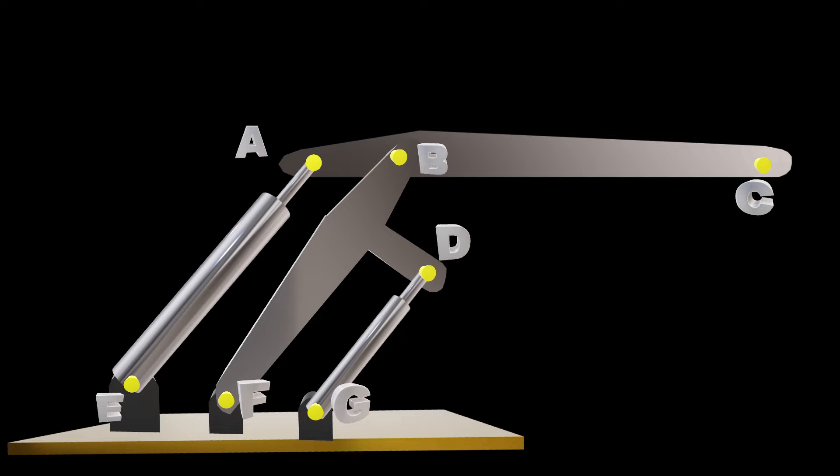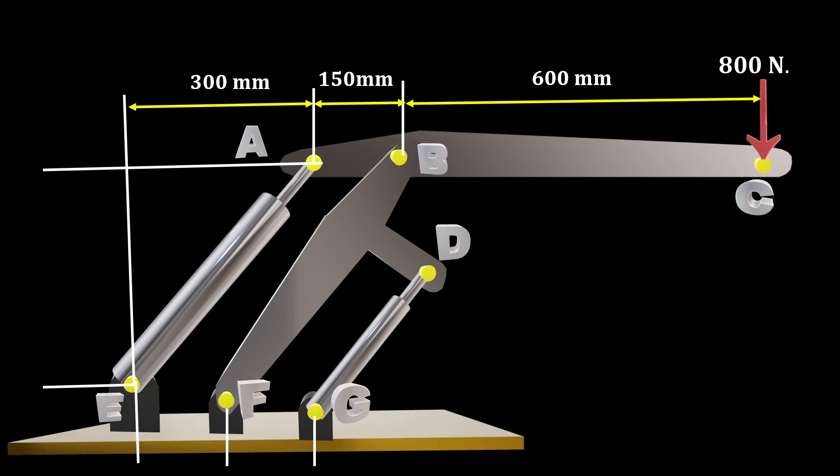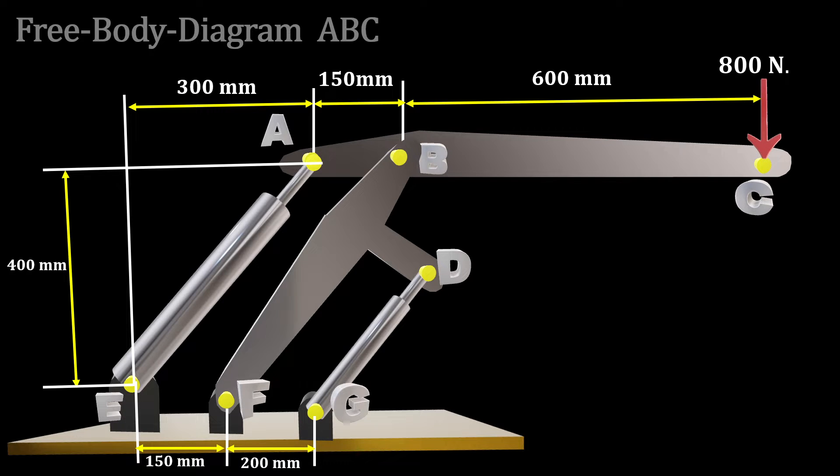To solve this problem we need to dissect it into different free body diagrams. Based on those free body diagrams we approach our problem and get the forces in each part, then by dividing the force by the area we'll get the normal stress in it.